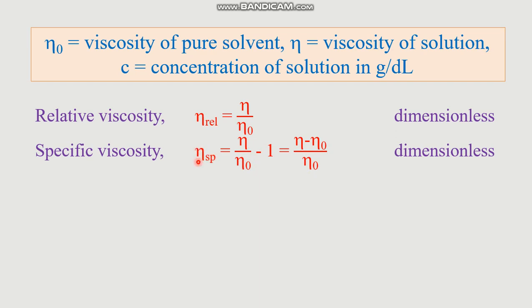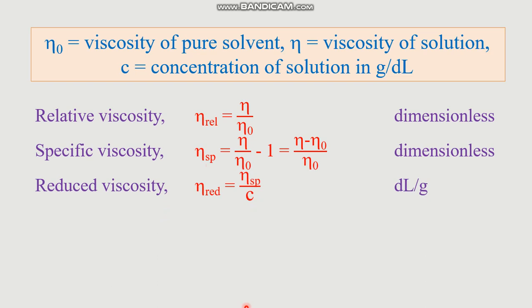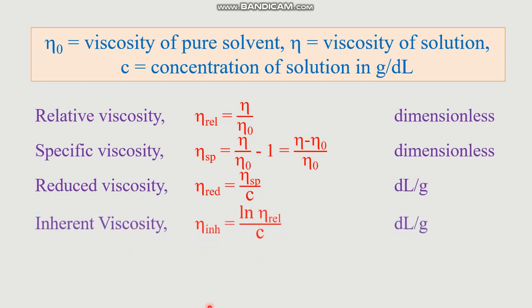If you divide specific viscosity by concentration, you get another terminology known as reduced viscosity, denoted as eta-reduced, with the mathematical expression eta-specific over C. Since there is a factor of one over C, it has the dimension of reciprocal of concentration, and therefore its unit is deciliter per gram. If you take the natural log of relative viscosity and divide by concentration, you get inherent viscosity, denoted as eta-inh, with the expression ln(eta-relative) over C, also with units of deciliter per gram.